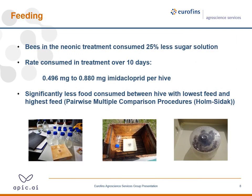Now to the feeding results. The bees in the neonicotinoid treatment consumed about 25 percent less sugar solution on average than the control, so they noticed something was different. The total imidacloprid consumed in the treatment over 10 days was half a milligram for the hive with the lowest consumption and about 0.9 milligrams for the hive with the highest consumption. The lowest and highest hives differed significantly, but not the hives in between.